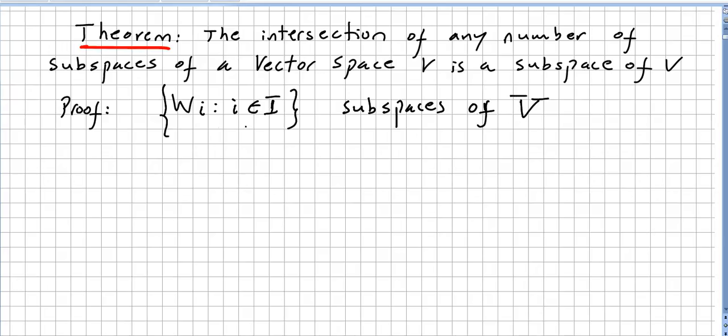So wi, where i is in I, are all subspaces of vector space V. And let us say that W is the intersection of this collection here, i in I.